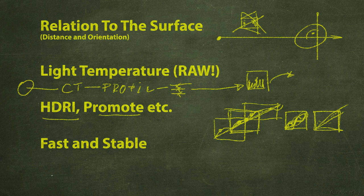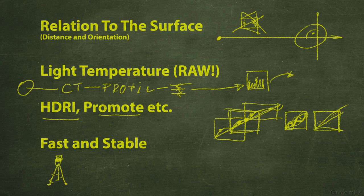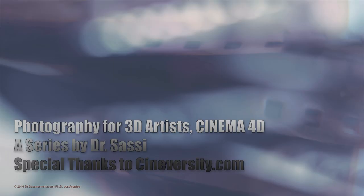Fast and stable: a tripod is needed for really stable data. It should be easy to set up very fast, with no screws, and the camera should be mountable with one click. Anything that keeps you from using it means you won't use it, and then you get blurry results. Even if you can hold a camera still for one second, after three or four hours with a long lens it's no longer possible. Use a tripod as often as possible. That sums it up — thanks for listening, have fun with it, bye.